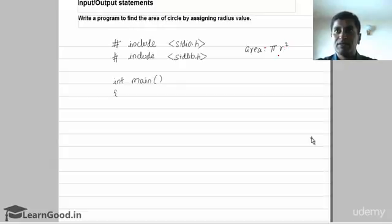So r is the radius. The radius value has to be assigned and then you have to find out the area. Now this pi value is fixed, it's a constant that is 3.142, so you can declare a constant.